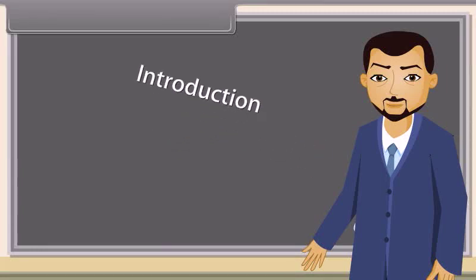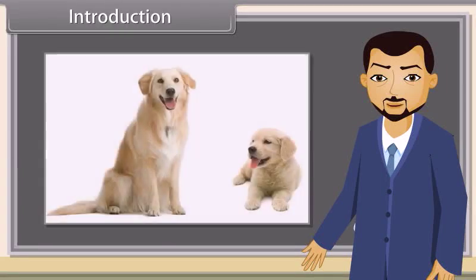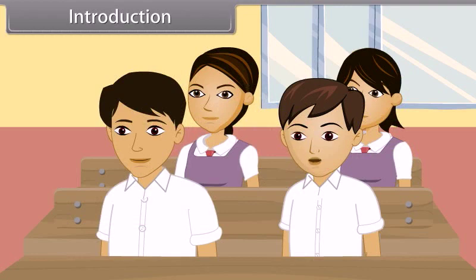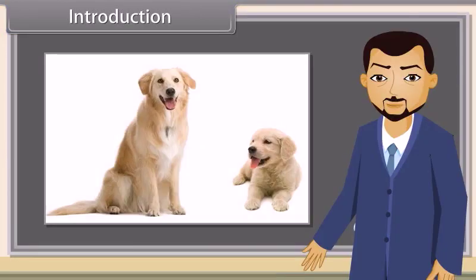What can you see in this picture? We can see a dog and its puppy. Correct.